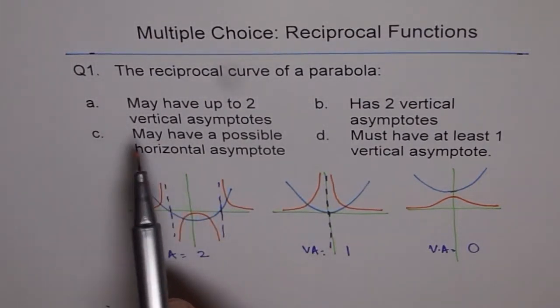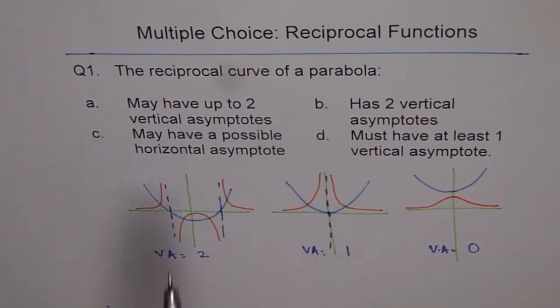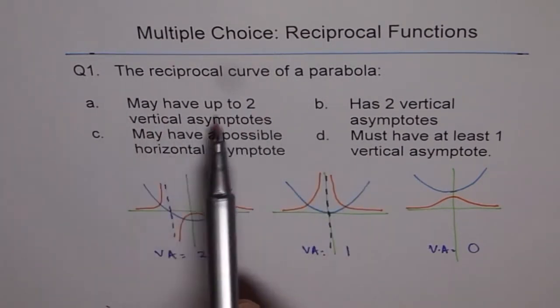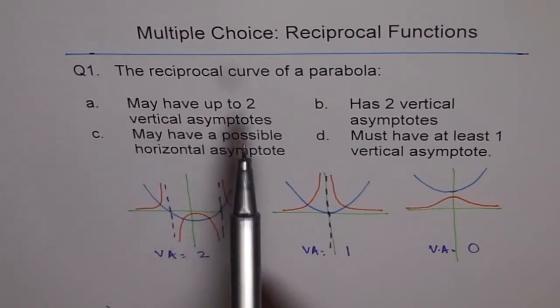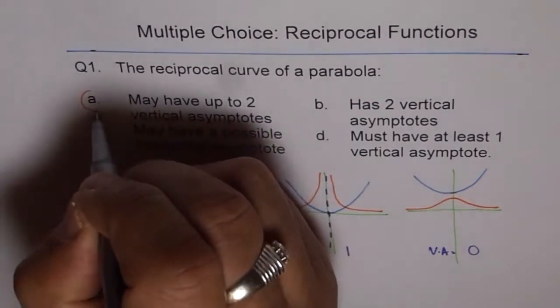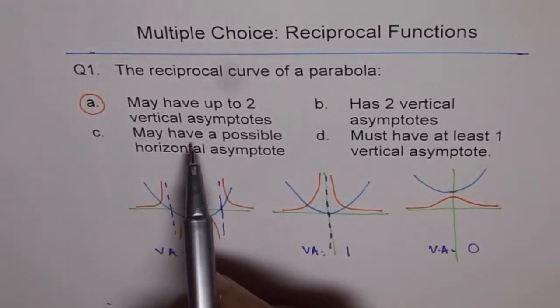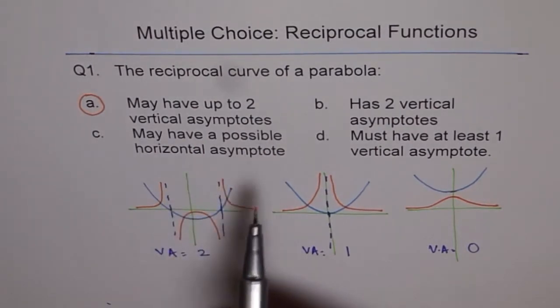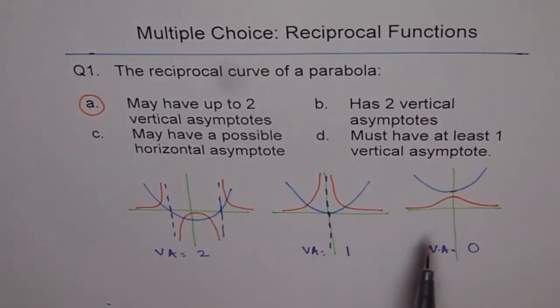Now if you look at these four options, 'may have up to two vertical asymptotes' is probably the best option. We'll go for that. 'May have a possible horizontal asymptote'—yes, sometimes, but that is not the criteria here. It may or may not have one. At times it may have just an oblique asymptote.